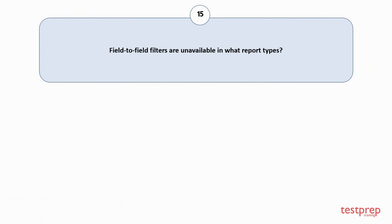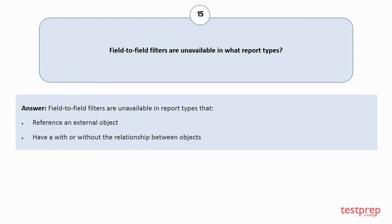Question number 15: Field-to-field filters are unavailable in what report types? Field-to-field filters are unavailable in report types that: 1. Reference an external object. 2. Have a with or without the relationship between objects.